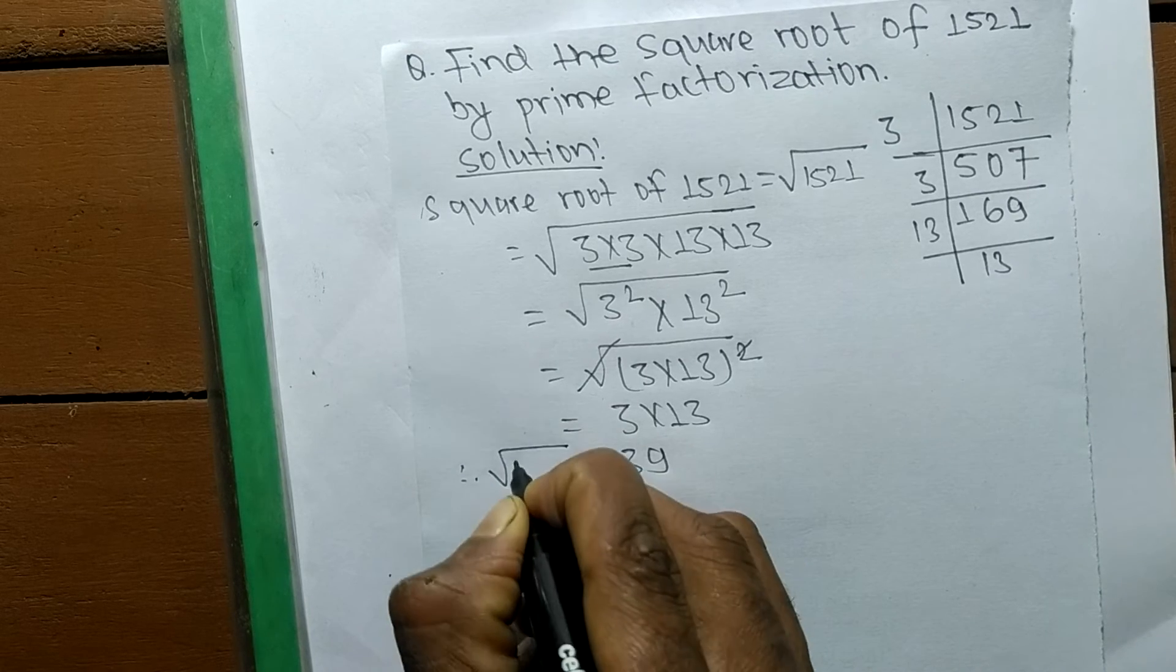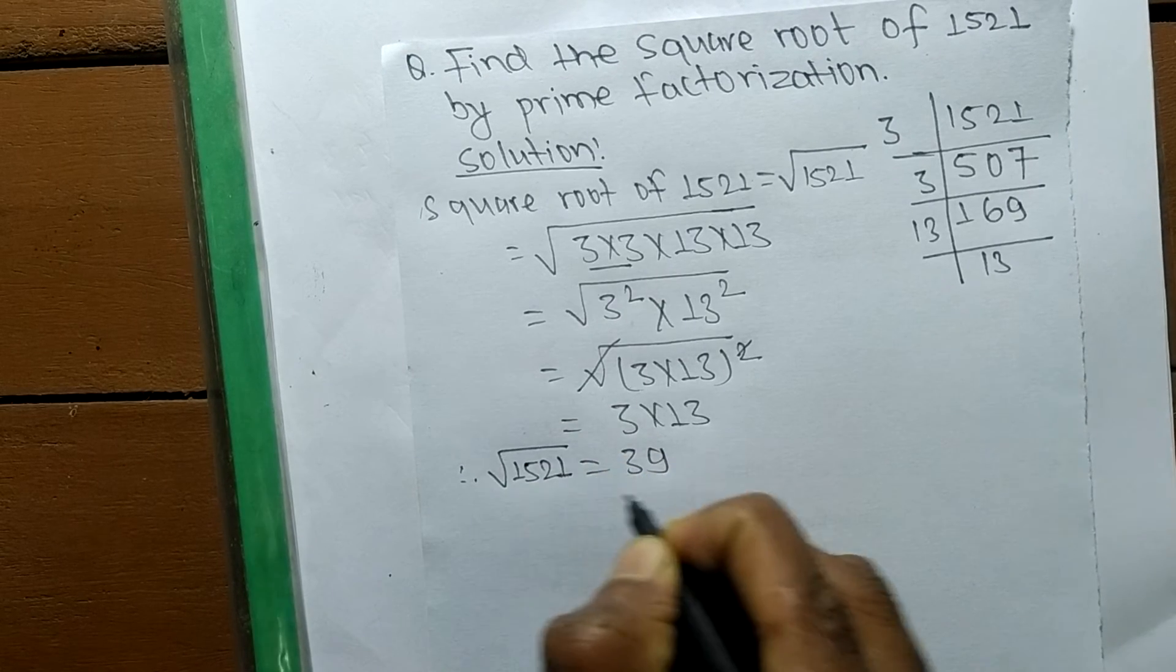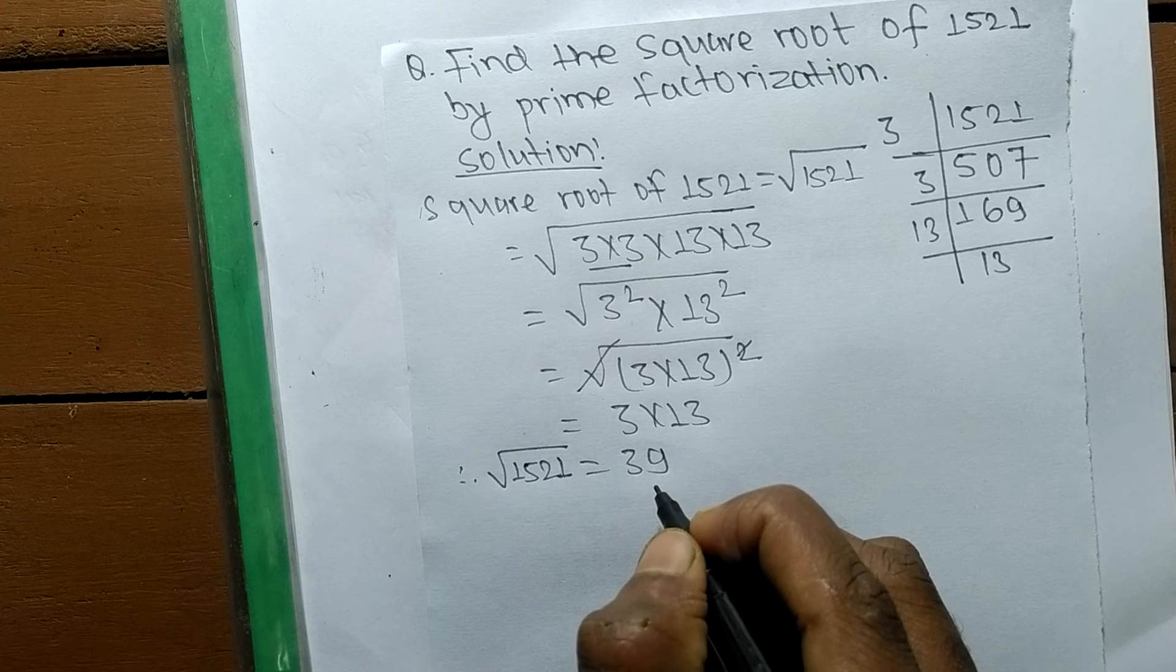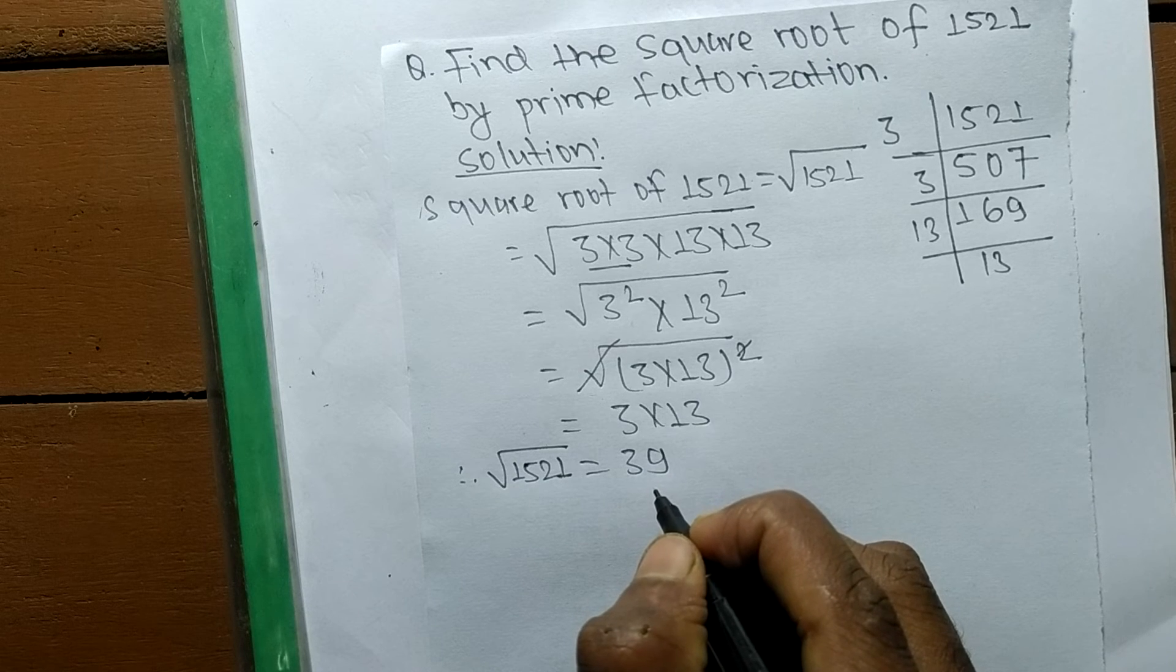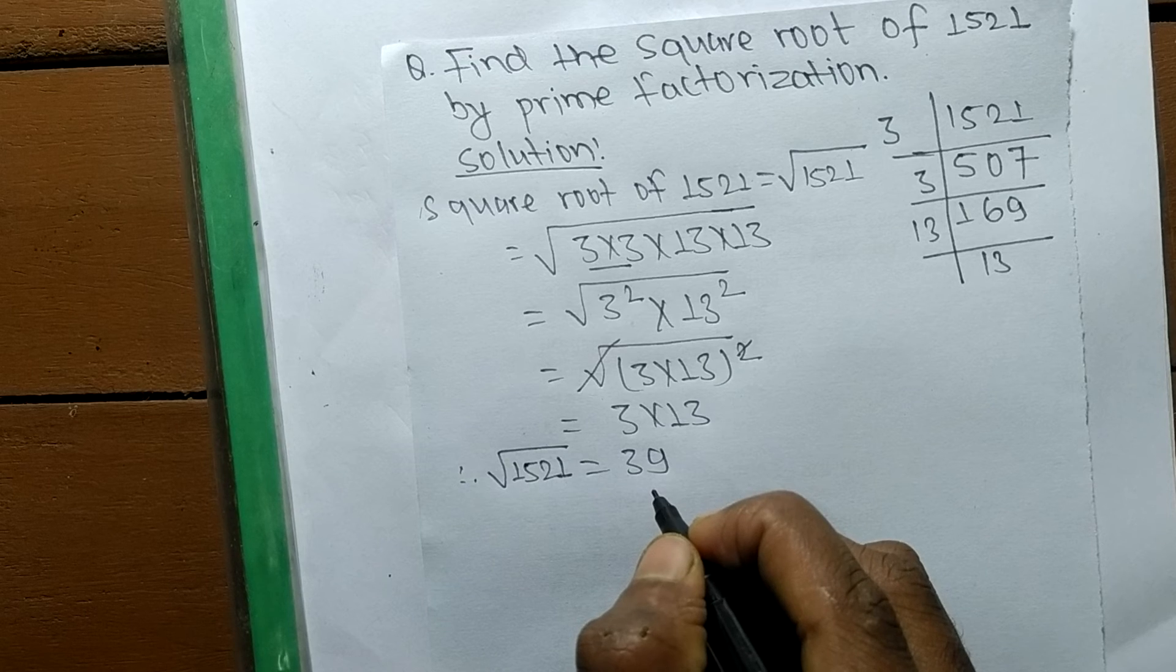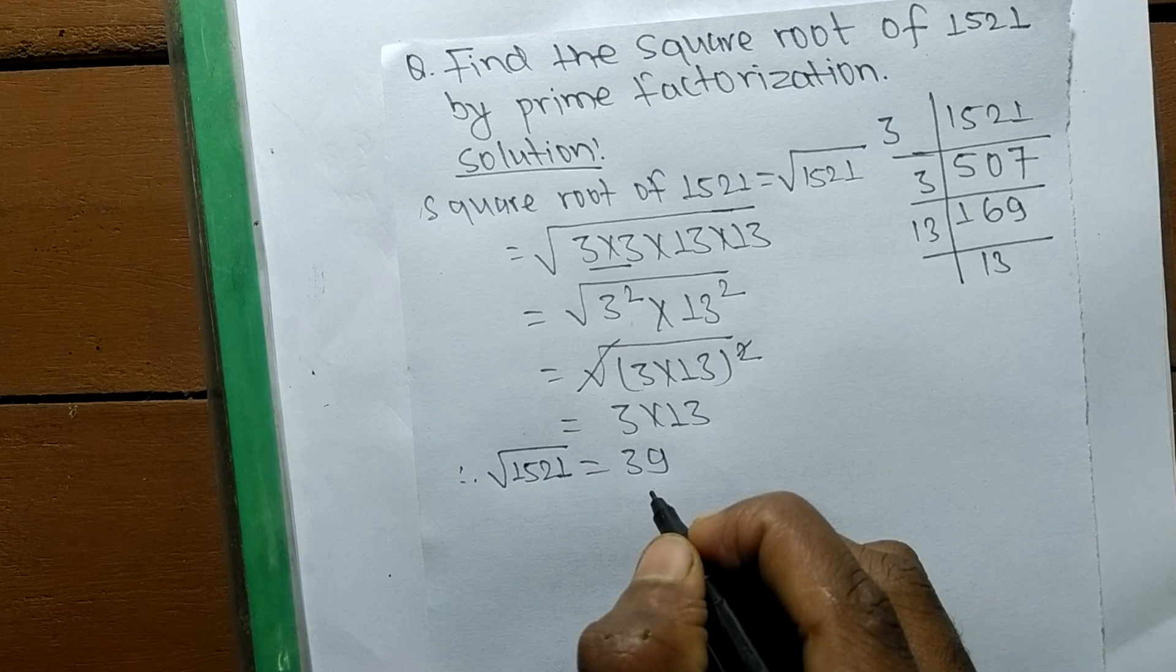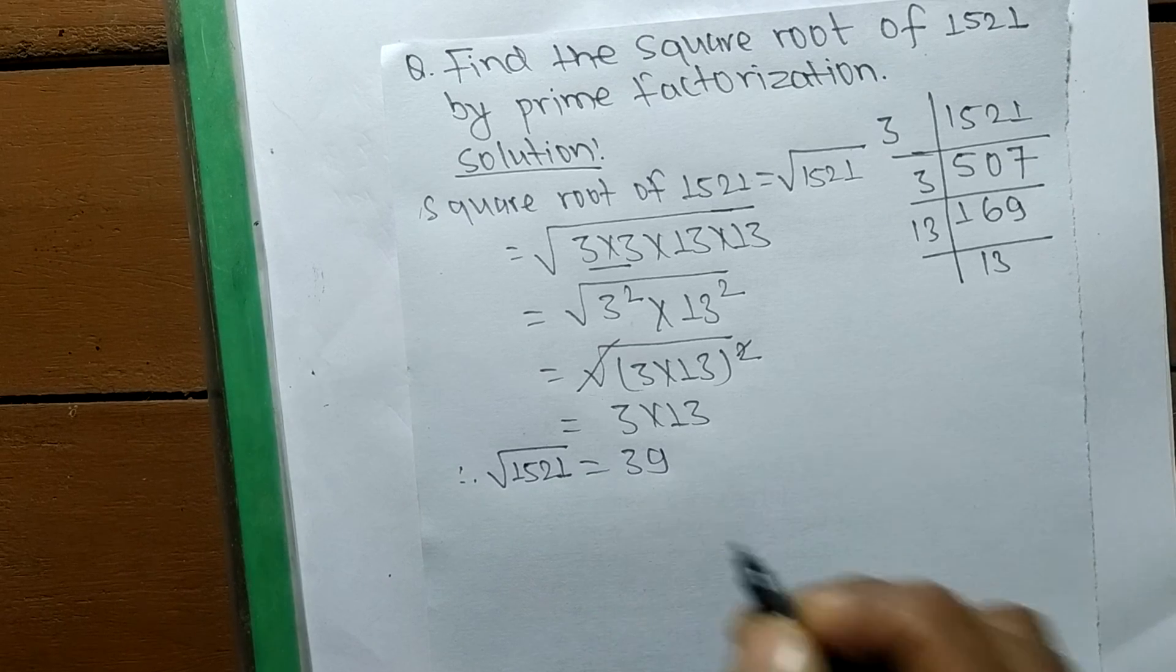So the square root of 1521 is 39. That's it for today. If you have any question related to math and science, just comment your question in the comments below and we shall provide a video solution. Thank you.